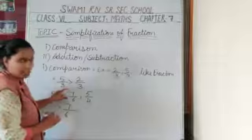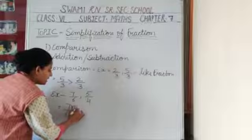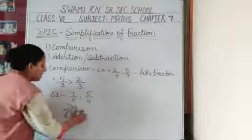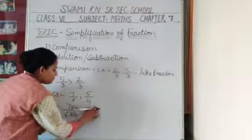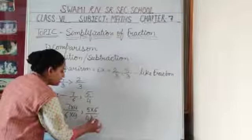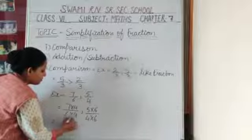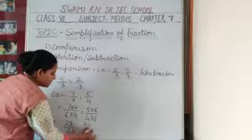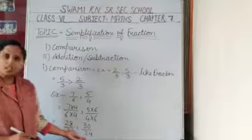The meaning of cross multiply: 7 upon 6 — the first number is multiplied by the second denominator, which is 4. Therefore I multiply by 4. For 5 upon 4 — the second number is multiplied by the first denominator, which is 6. Now 7 × 4 = 28, 6 × 4 = 24. And 5 × 6 = 30, 4 × 6 = 24. Now we have converted into like fractions.